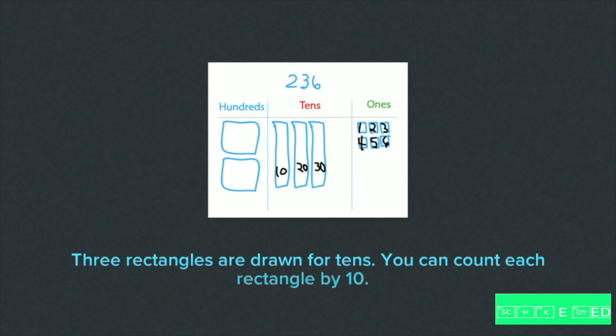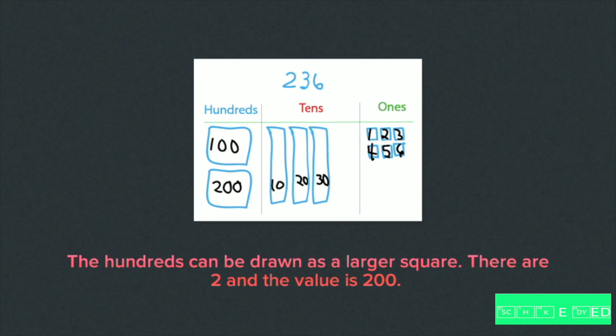Be sure to label your tens. The hundreds can be drawn as a larger square. There are two and the value is 200. Be sure to label your 100s: 100, 200.